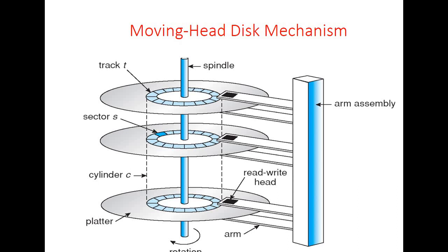Moving head disk mechanism. A disk is made up of several platters. The platters are circular in shape and the platter surface is connected with a read-write head with the help of arm assembly. Each platter is divided into many tracks, and each track is divided into many sectors. All the platters are connected with the help of a central spindle, which rotates the platters in a circular fashion, and the arm assembly moves the read-write head on the surface of each platter in forward and backward direction.